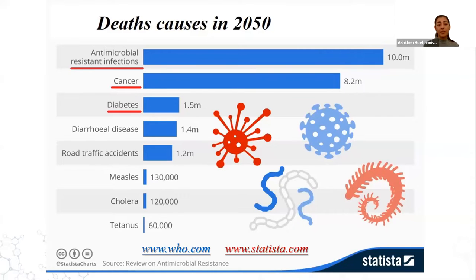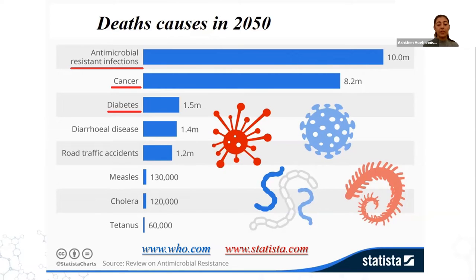Modern technologies and drugs are not able to fight against these problems, so our research cycle is continuously developing new approaches for elimination, treatment, and diagnosis of these diseases. One of these approaches is nanobiotechnology, which relates to new methods for diagnosing and treatment — so-called theranostics — investigating green biotechnology methods.